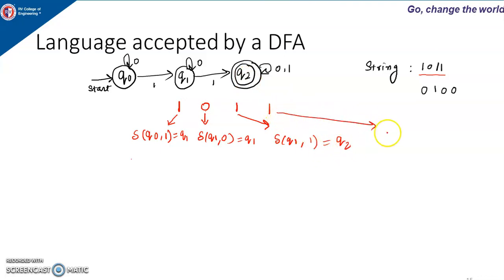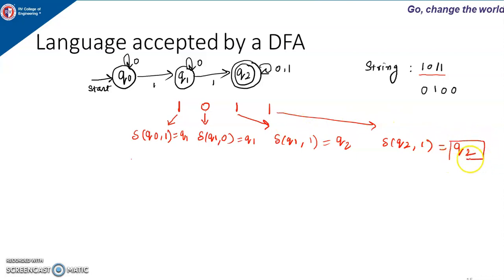The next input is 1 and machine is in Q2. When machine is in Q2 and input 1 is given, the next state is Q2 only. At end of the input, the machine is in state Q2, which is a final state. When end of the input string is encountered and we are in the final state, that string is accepted by the machine.